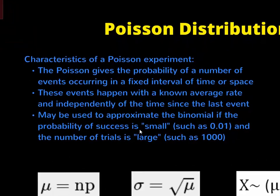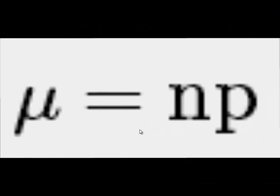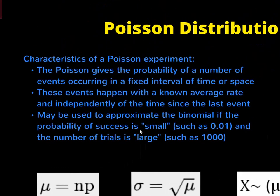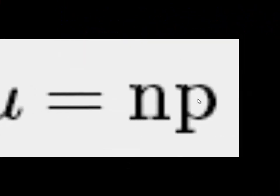Again, we have a formula. It looks very similar to the binomial. Mu, the expected value is n, successes, times the probability. They're going to tell you what the average time is. That's going to become our probability. Our standard deviation is just the square root of the mean. Because we don't have failures in this case, we have just the probability of things occurring. We just take the square root of our mean and we find our standard deviation.